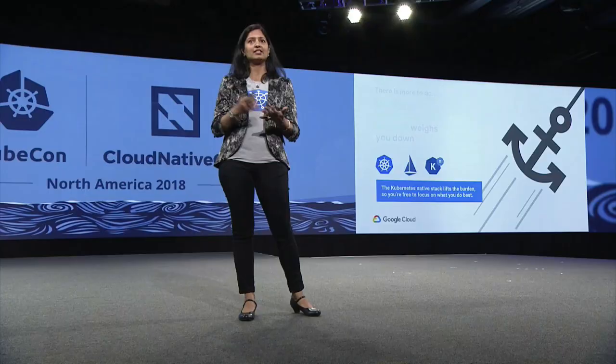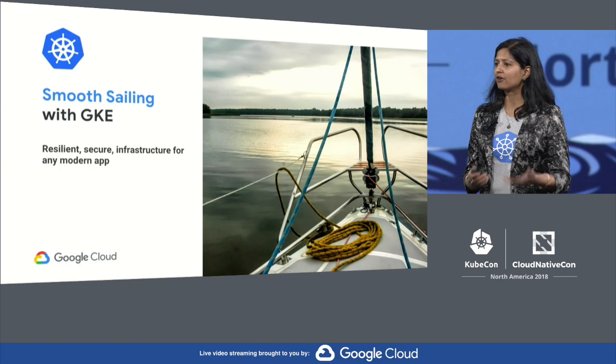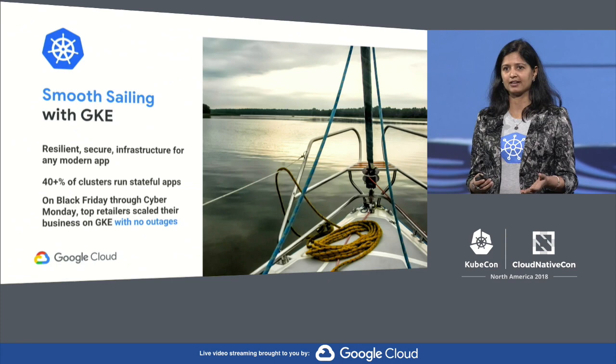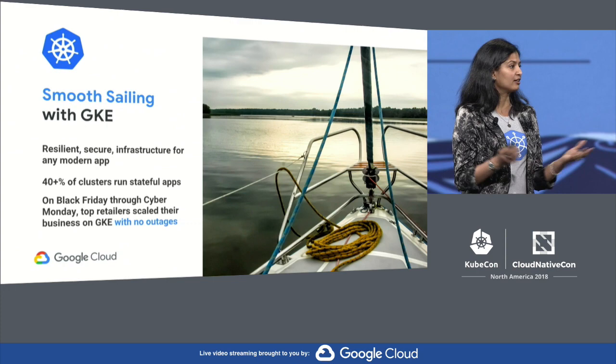Part of that is the new projects, Istio and Knative, building on top of Kubernetes. At the base of this stack is Kubernetes, which provides resilient, secure infrastructure for any modern application — not just web services, but also stateful applications. On GKE, more than 40% of clusters are running stateful applications. And as a proof point for resilience, many retailers in the US and worldwide used Kubernetes this past Black Friday to scale to new heights, all with zero outages.